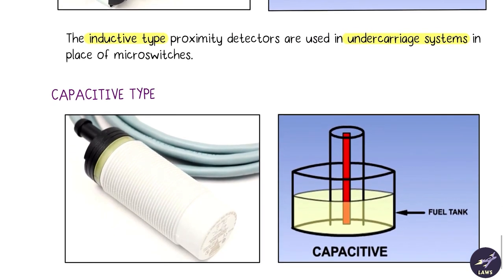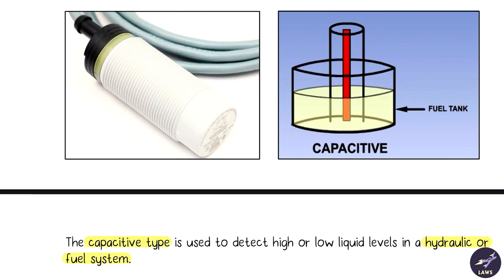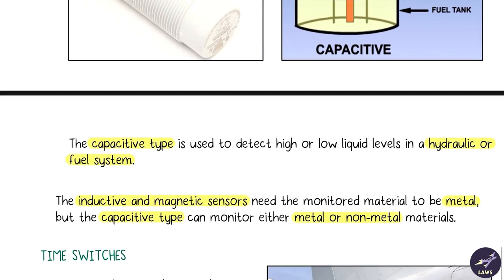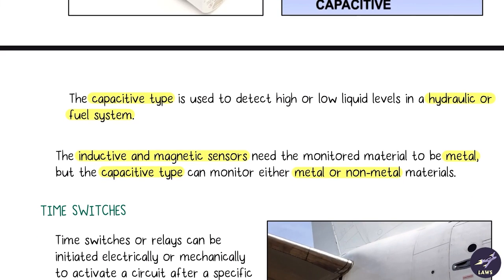Then we have capacitive type, used to detect high or low liquid levels in a hydraulic or fuel system. As we know, a capacitor has two metals separated by an insulator which is the dielectric. This dielectric here is a combination of fuel and air - this part will be air, this part will be fuel. Lesser the fuel, less the conductivity, meaning less electric current will flow through this arrangement and you get a low fuel indication in the cockpit. Similarly, if the amount of fuel is more, more current will flow and the fuel indication will be high. Inductive and magnetic sensors need the monitored material to be metal, whereas the capacitive type can monitor either metals or non-metals.